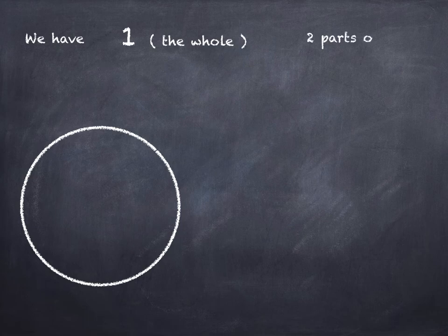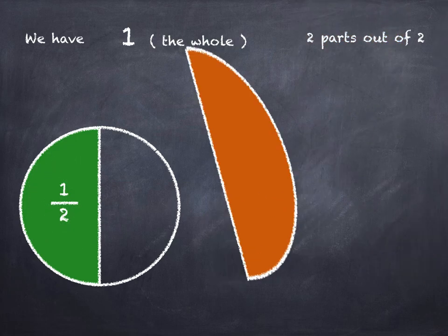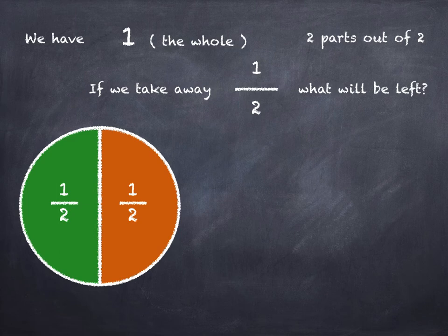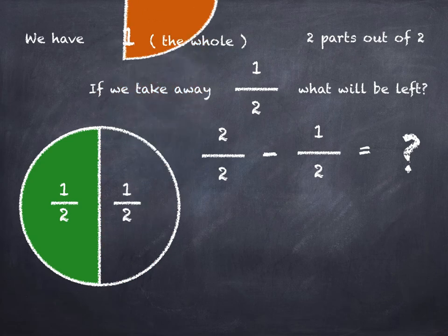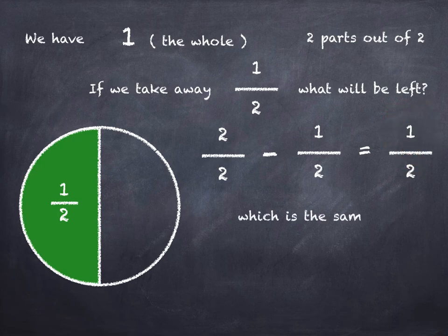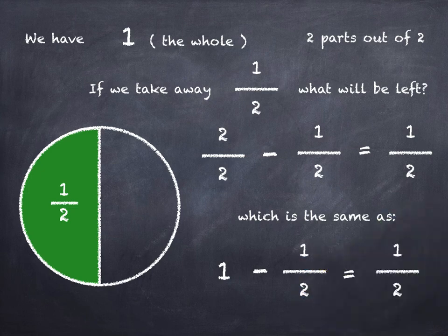This time we've got one — the whole — two parts out of two. One half, two halves. If we take away one half, what will be left? Two halves take away one half is how many? Let's take half away, and we can see we've got one half left. Which is the same as writing one take away one half equals one half.